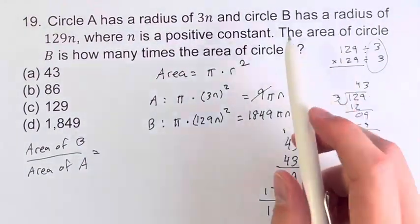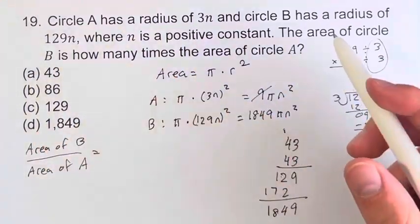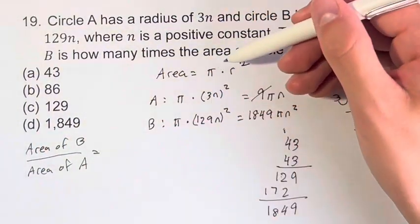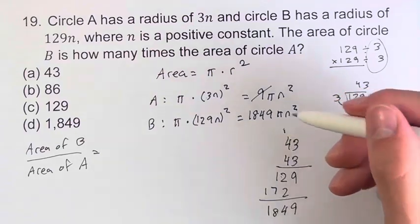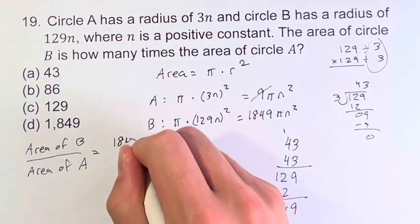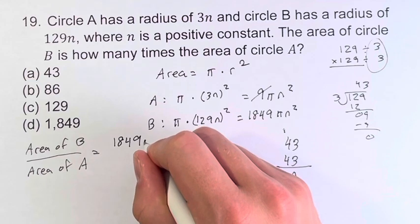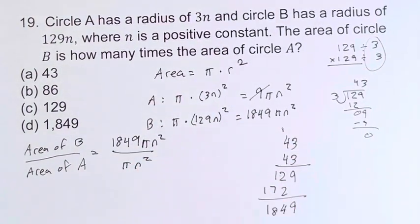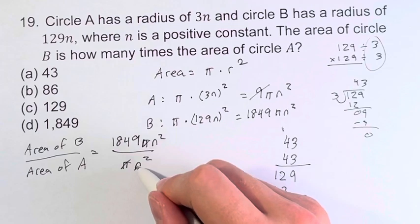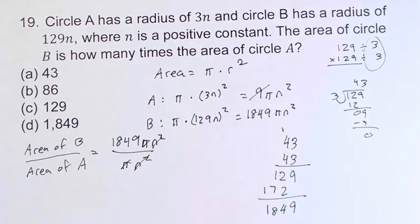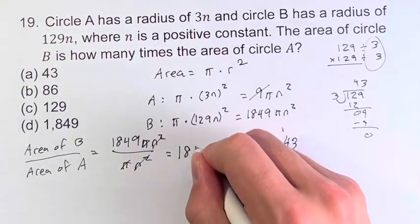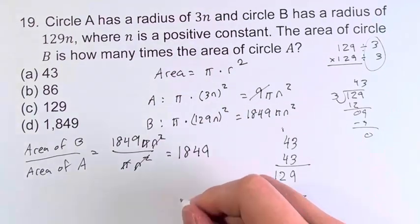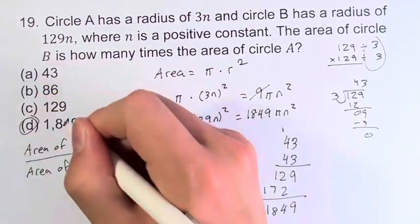So again, we're looking for how many times the area of circle B is the area of circle A. So we have to divide these. We have 1849πn² over πn². The π's cancel, the n²'s cancel. This is where that 9 would cancel, but we already canceled it out. So we're just left with 1,849. This is our final answer, which gives you D.